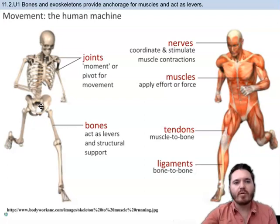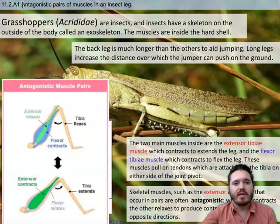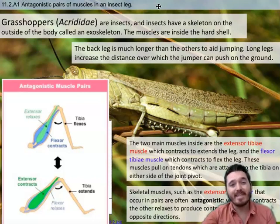This statement reads bones and exoskeletons provide anchorage for muscles and act as levers. Notice that it's not just talking about bones and the human skeleton but it's also talking about exoskeletons which are not in humans. These are typically found in insects and some crustaceans. Note that it's also talking about how these bones or exoskeletons provide the anchorage for muscles and act as levers. The reason why they mention exoskeletons is because they do want you to know about these antagonistic pairs of muscles in an insect leg.